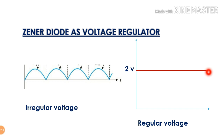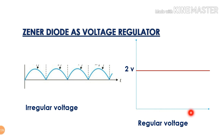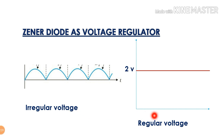This is an AC rectifier. The negative part is complete, this is positive. This is irregular, and this is constant. The battery is constant.